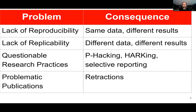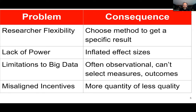In terms of questionable research practices, there's a gray zone between what the field agrees is bad behavior and what it considers best practice. This includes p-hacking — running 25 different statistical analyses but only reporting the ones that show the result you like — and HARKing, hypothesizing after the results are known, where you run analyses, get a result you like, and then act as though you predicted it all along.